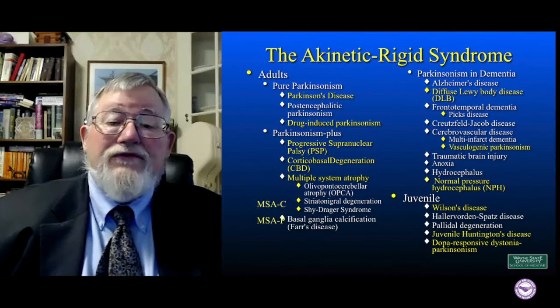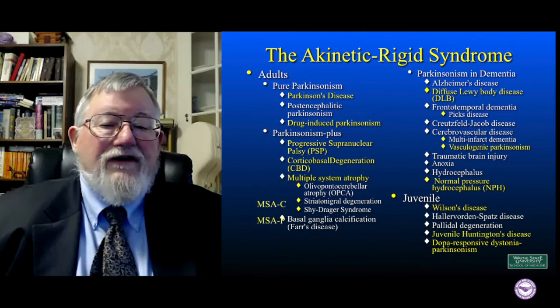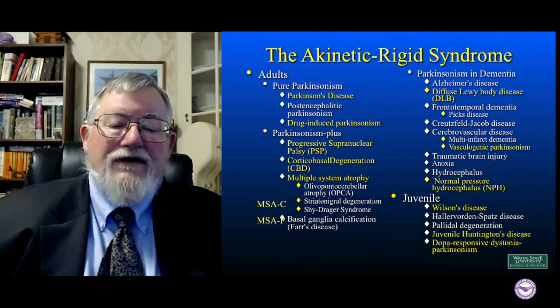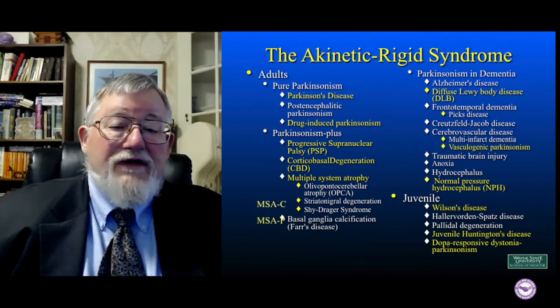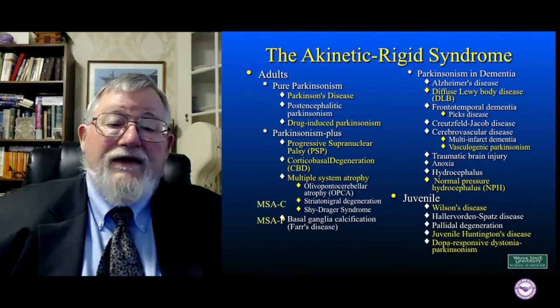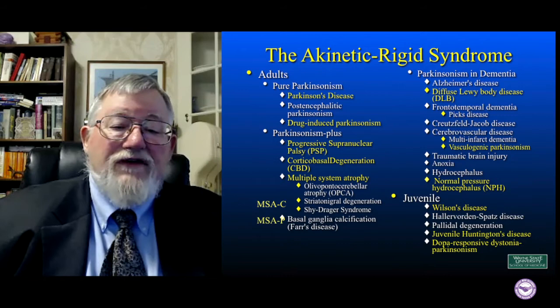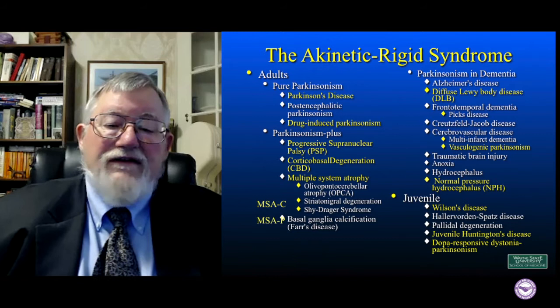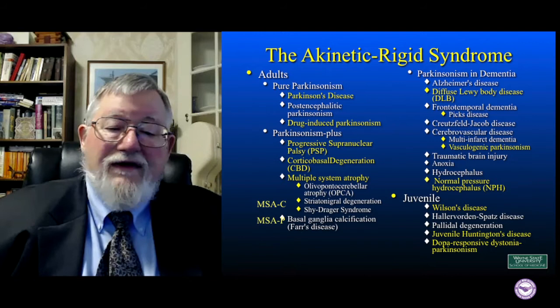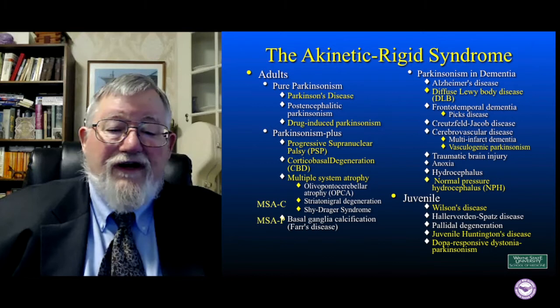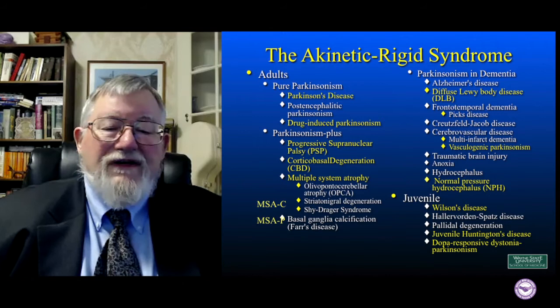There's also diffuse Lewy body disease — also known as dementia with Lewy bodies — which can present with Parkinsonism before you have any dementia, but has Parkinson's signs as fairly prominent features. Many other dementias like Alzheimer's and frontotemporal dementias can cause some Parkinsonism, more often late in the disease, but they're in the differential. Cerebrovascular disease can cause both dementia and vasculogenic Parkinsonism. You can get Parkinsonism after a traumatic brain injury, after anoxia, or with hydrocephalus. Normal pressure hydrocephalus doesn't usually look quite typically Parkinsonian, but nonetheless finds its way into the differential.